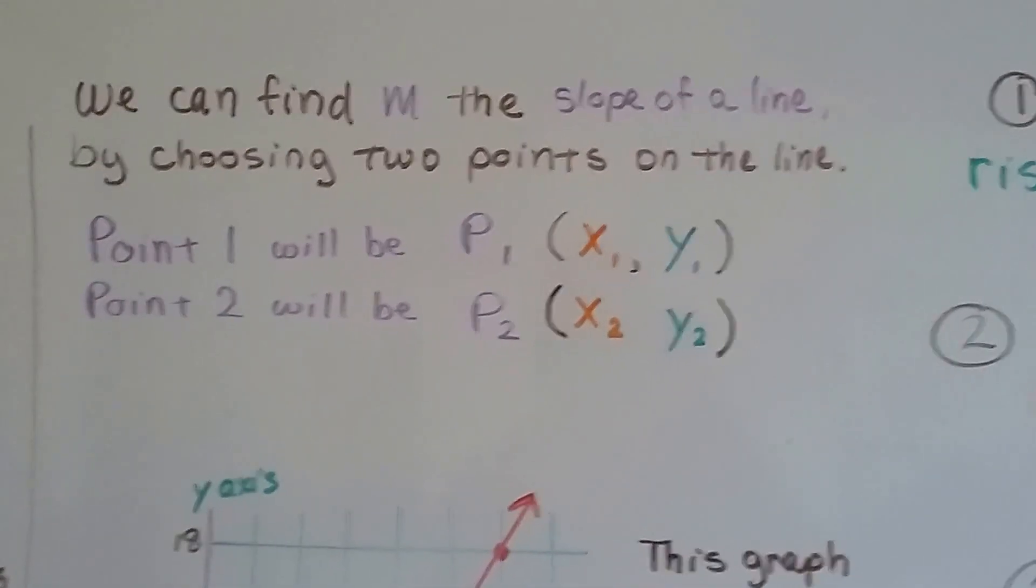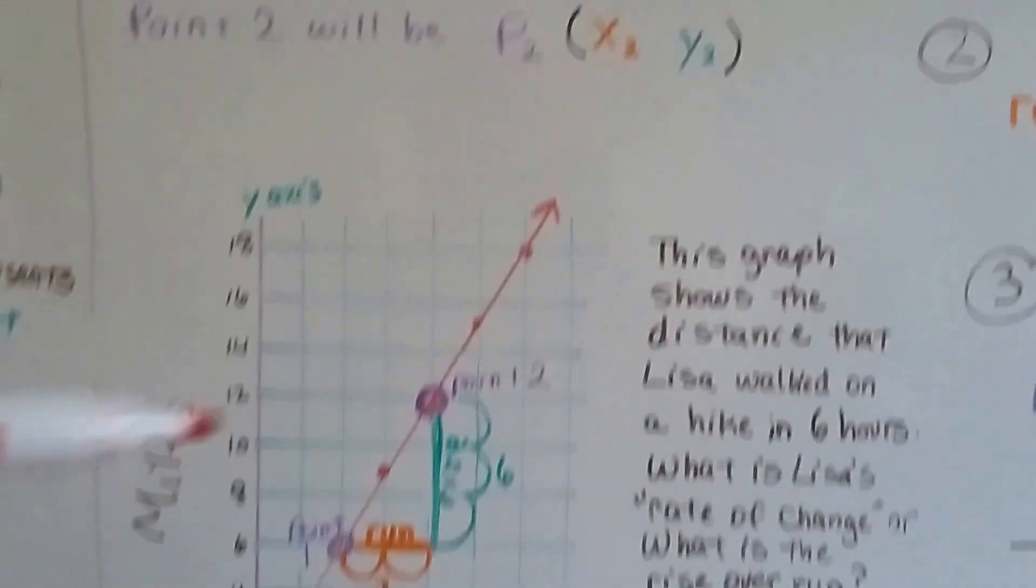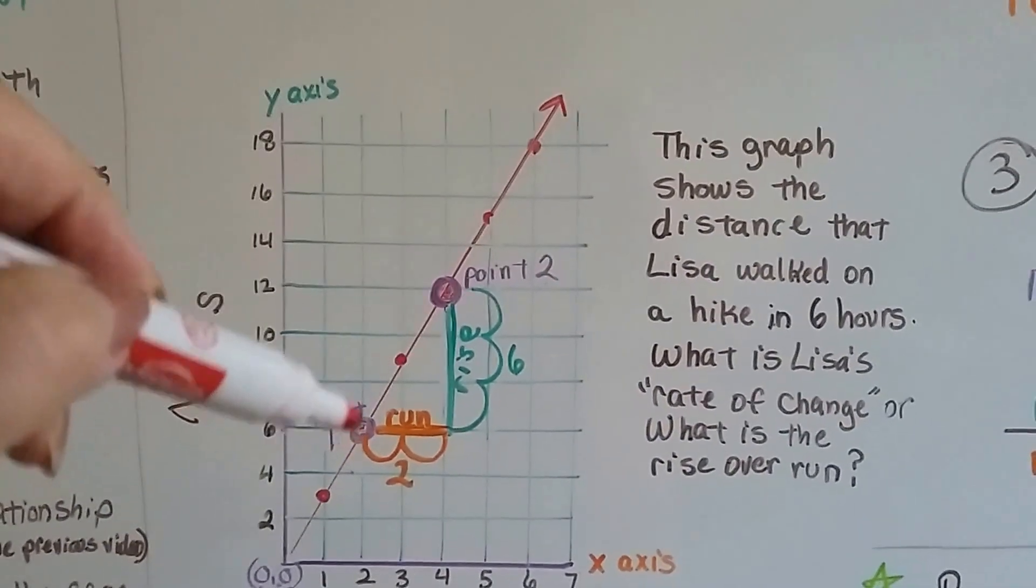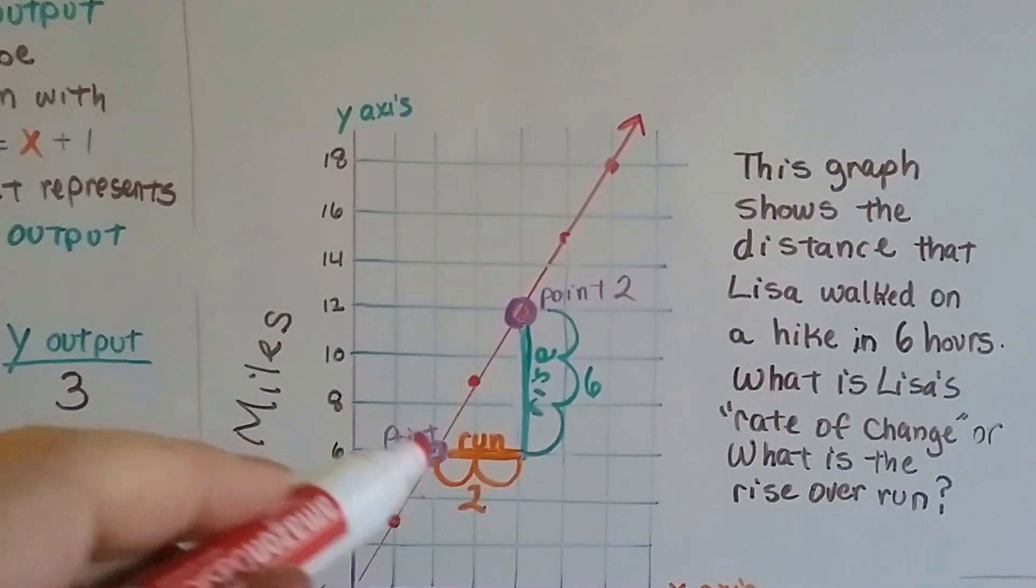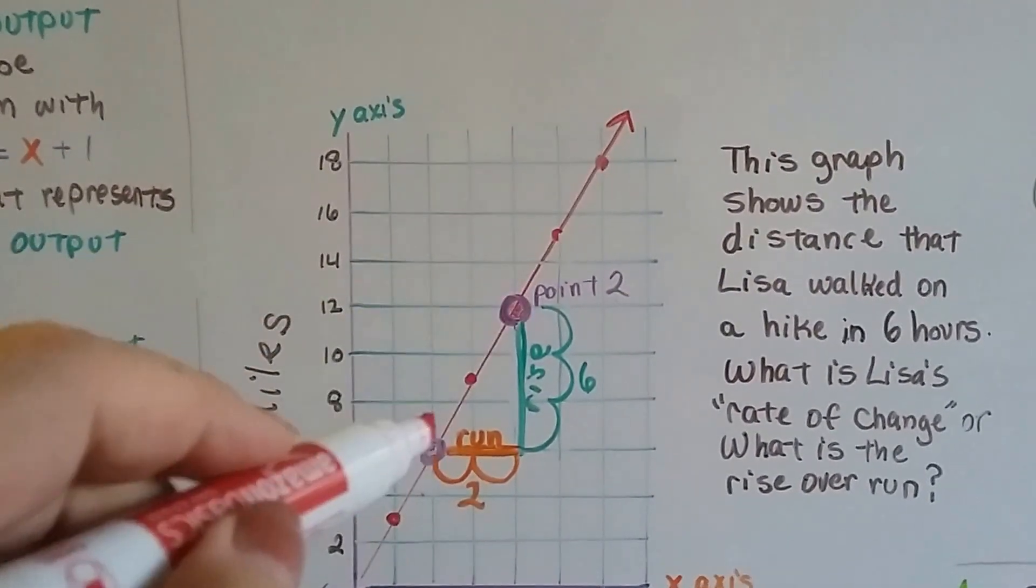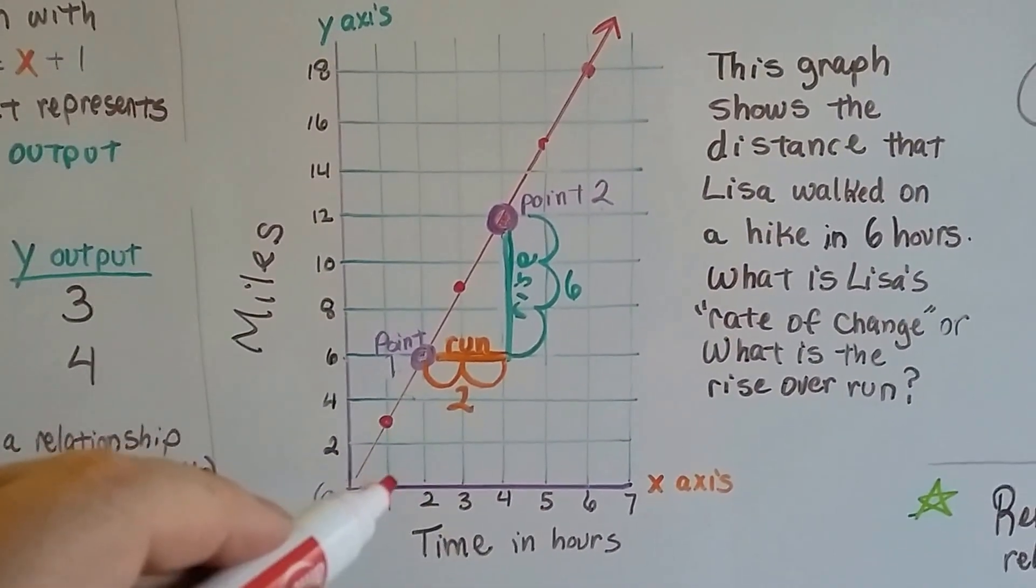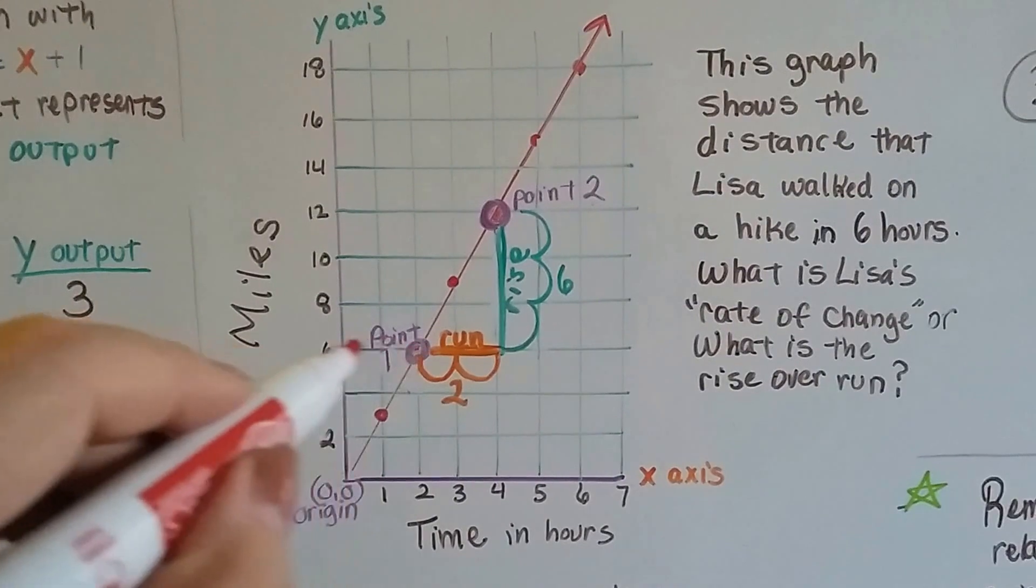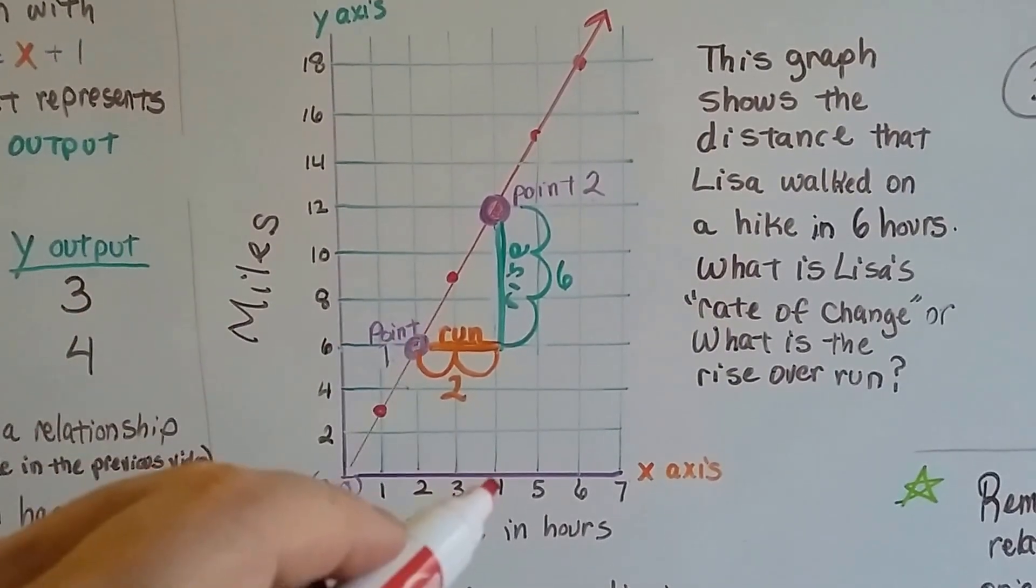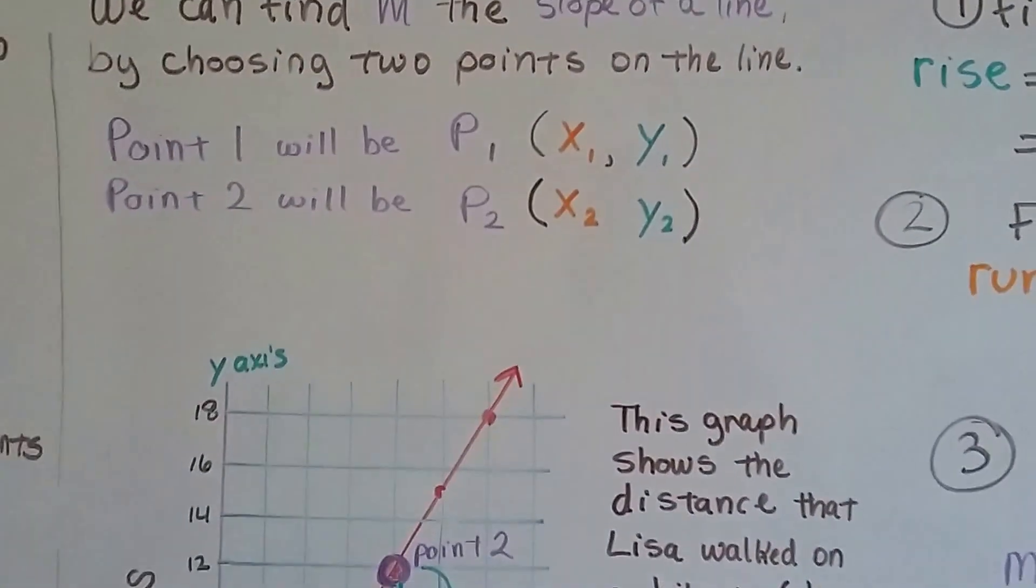We can find m, the slope of a line, by choosing two points on the line. We choose two points. I chose this one for point 1 and this one for point 2. I like to choose the lower one as the first point because it started from here. This was the first hour she walked, and she walked 3 miles. The second hour, she walked 6 miles. And in the fourth hour, she walked 12 miles.